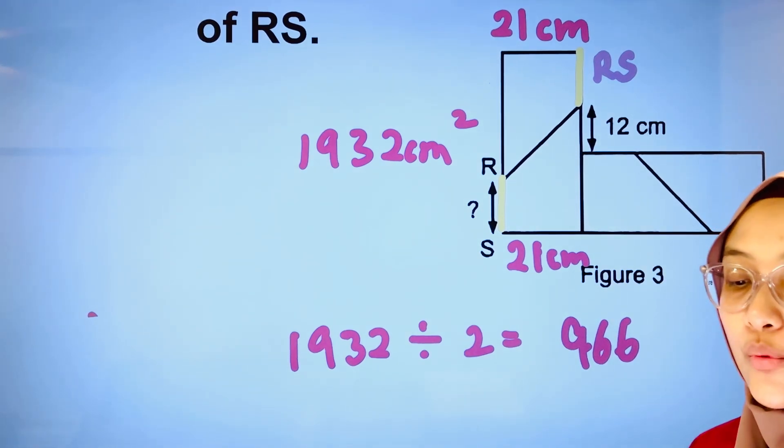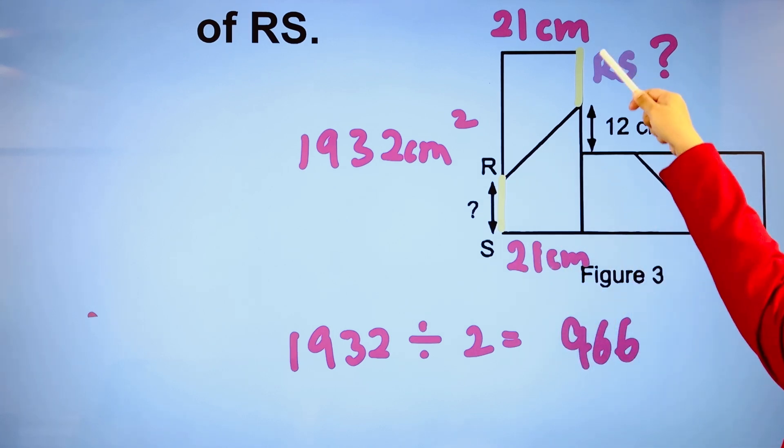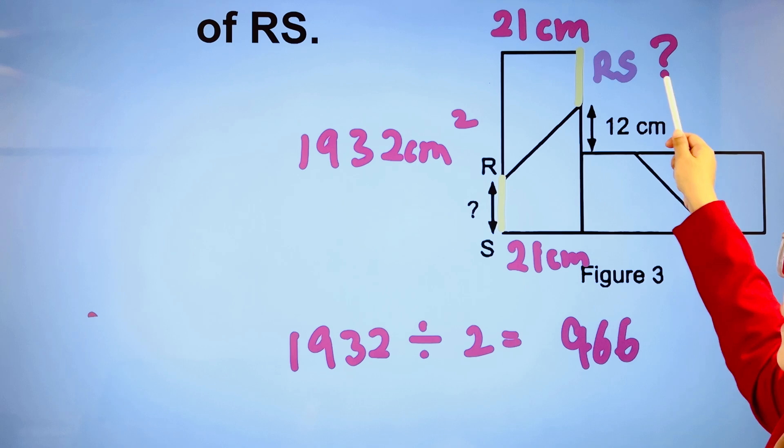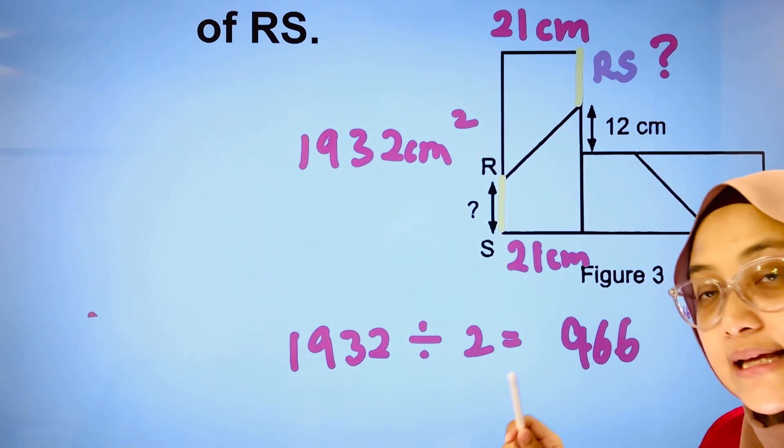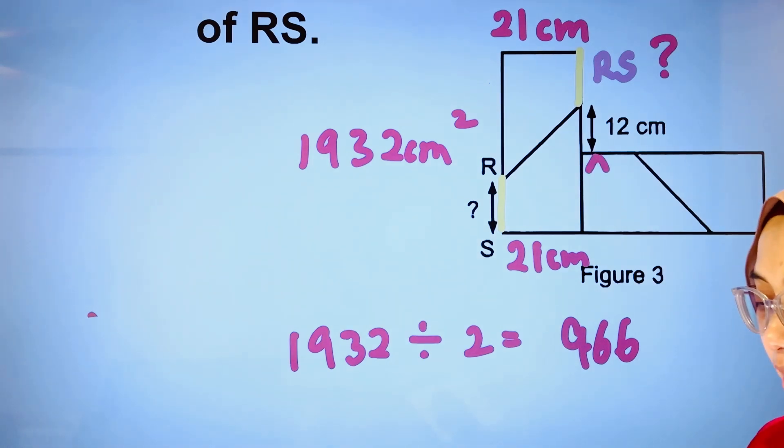Therefore, we can easily find RS by dividing area with the breadth of the rectangle, which is 21 cm, and we'll get the total length. After which, we can find RS by subtracting the length with 12 cm as well as 21 cm.